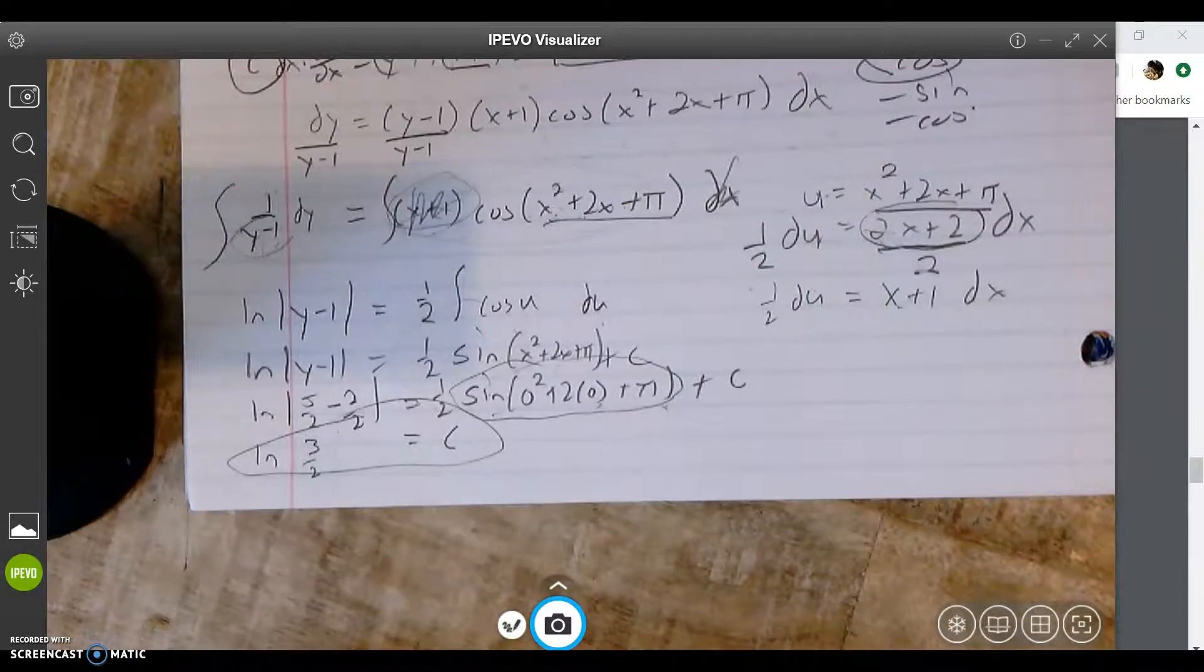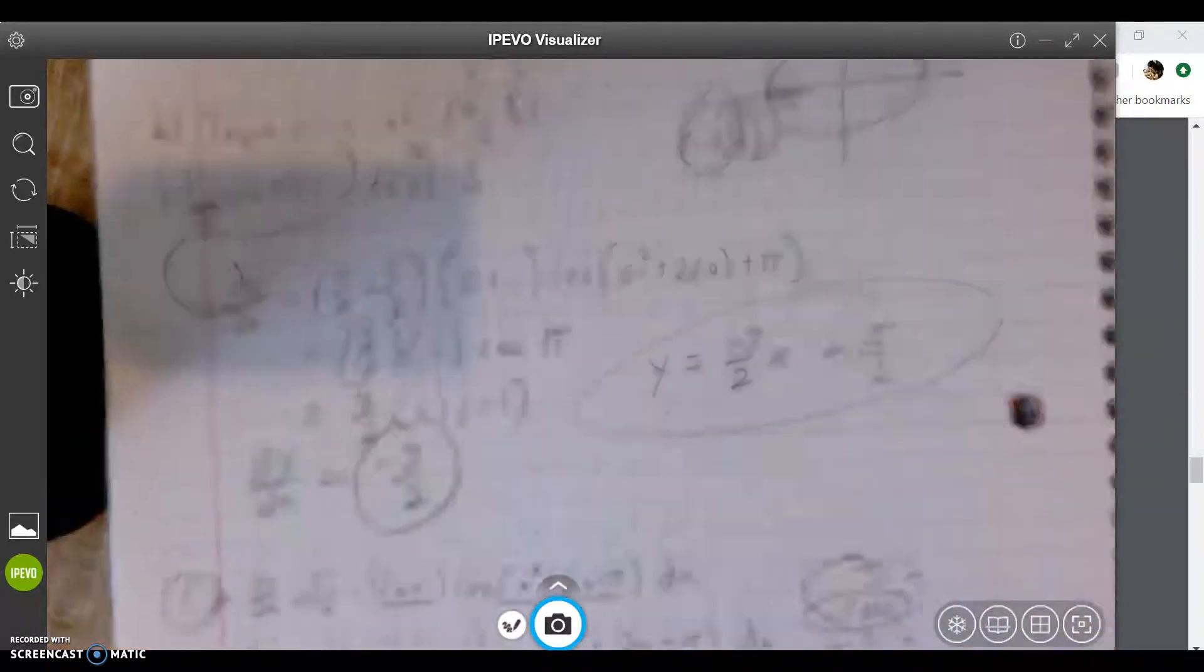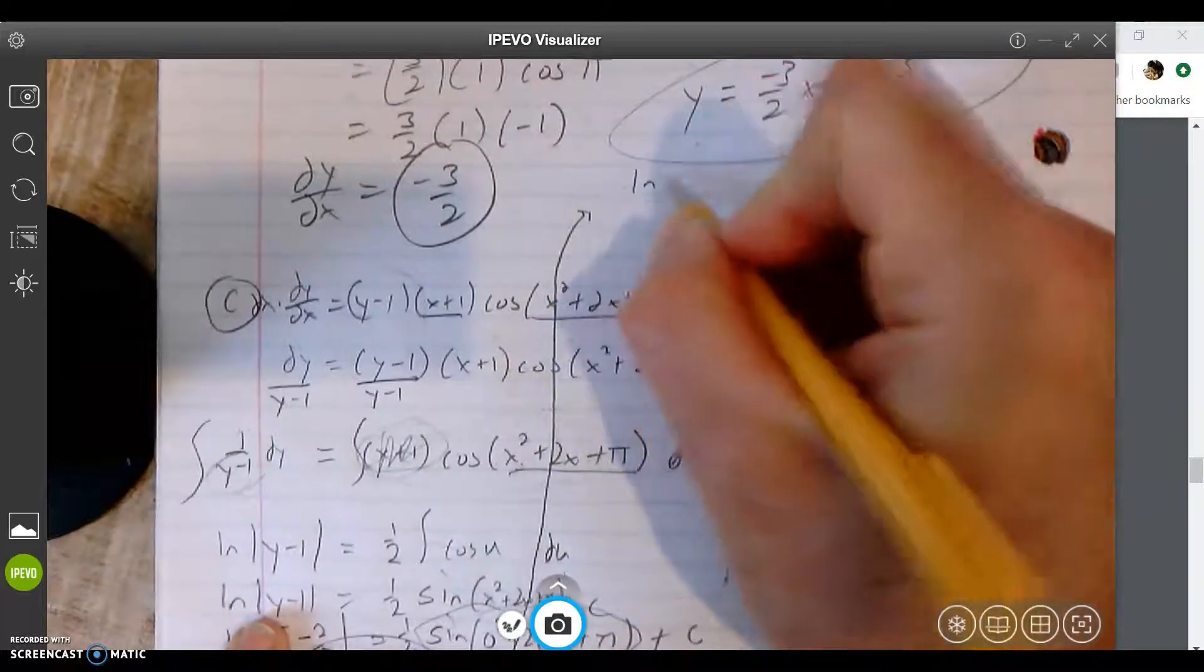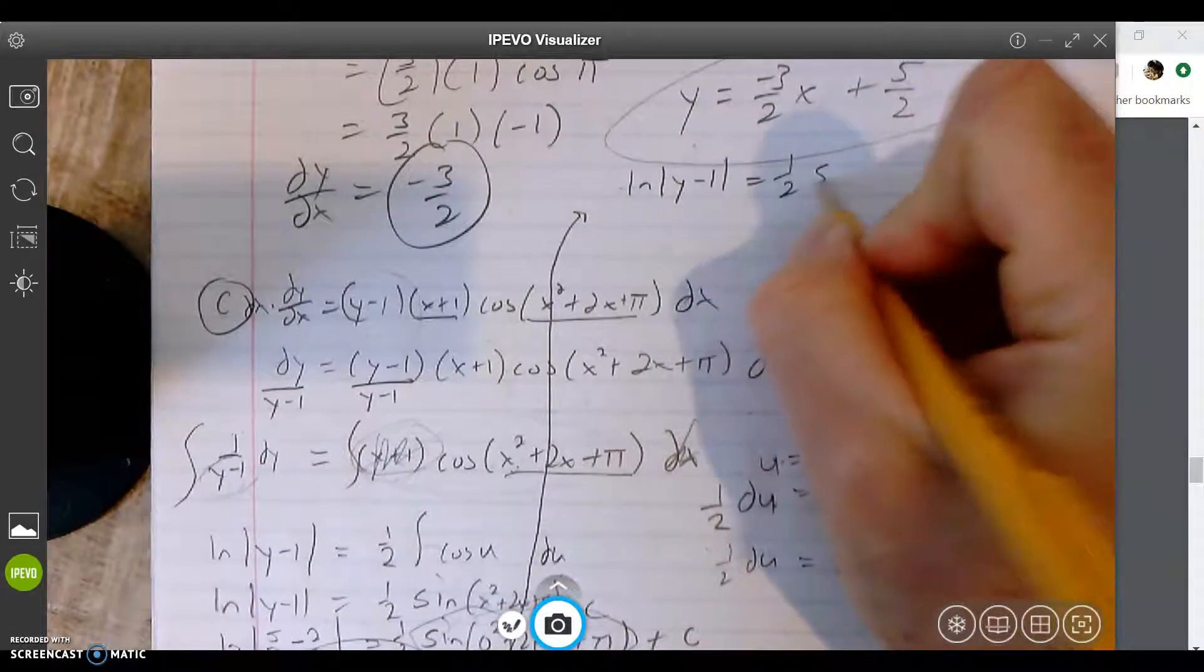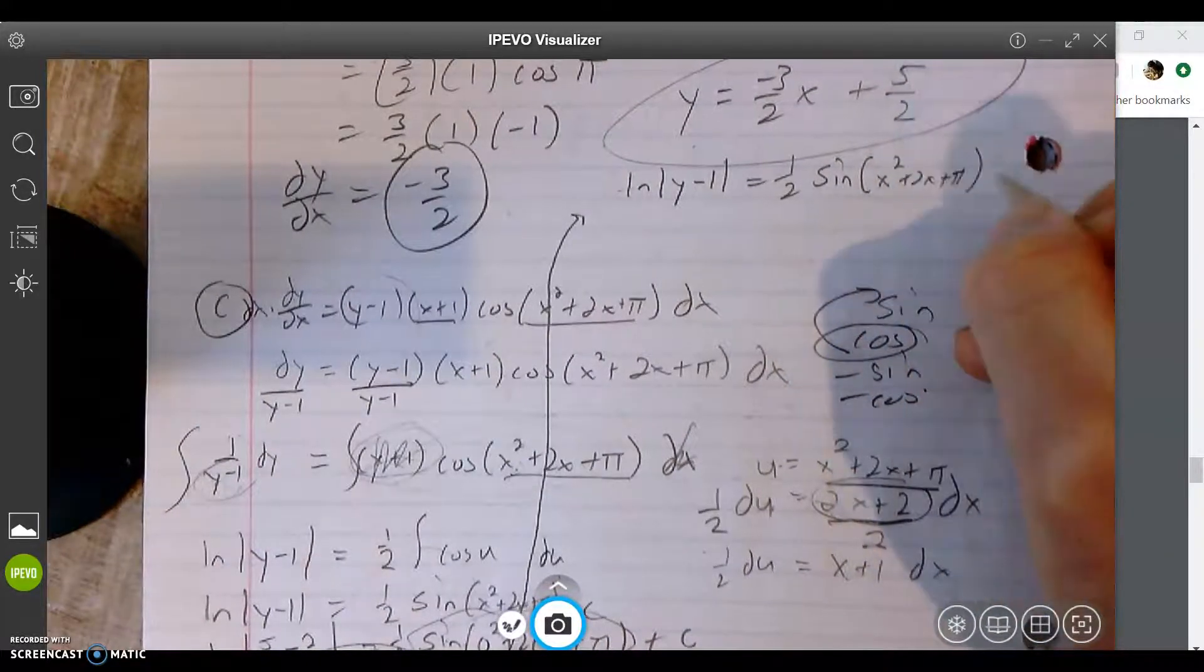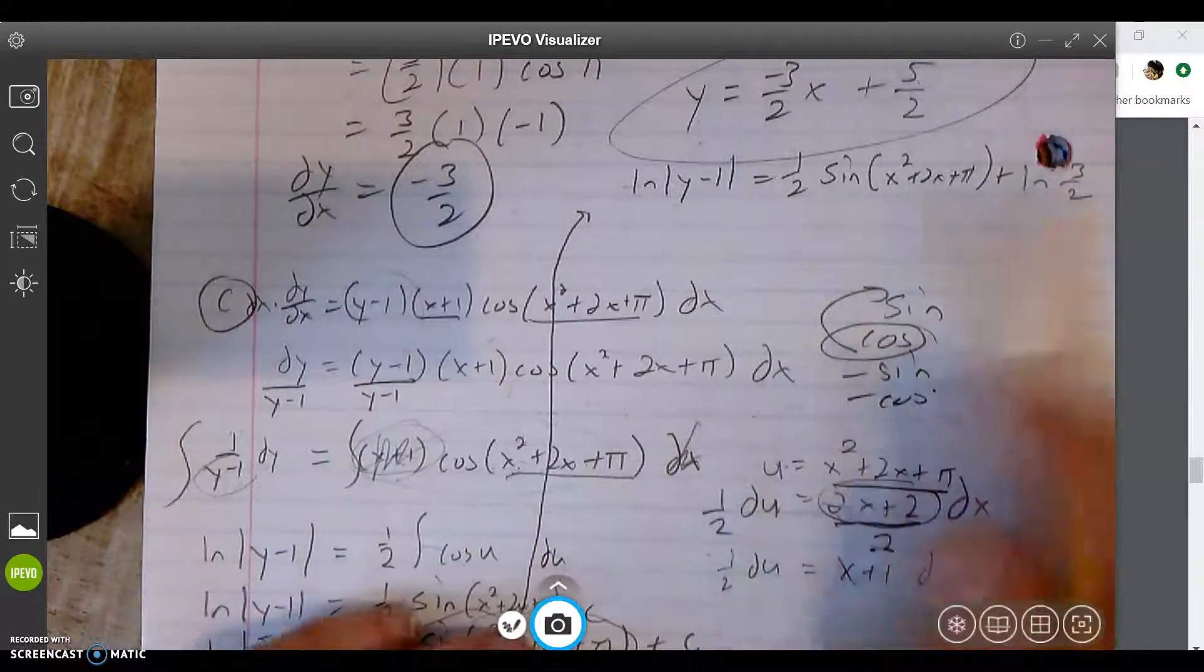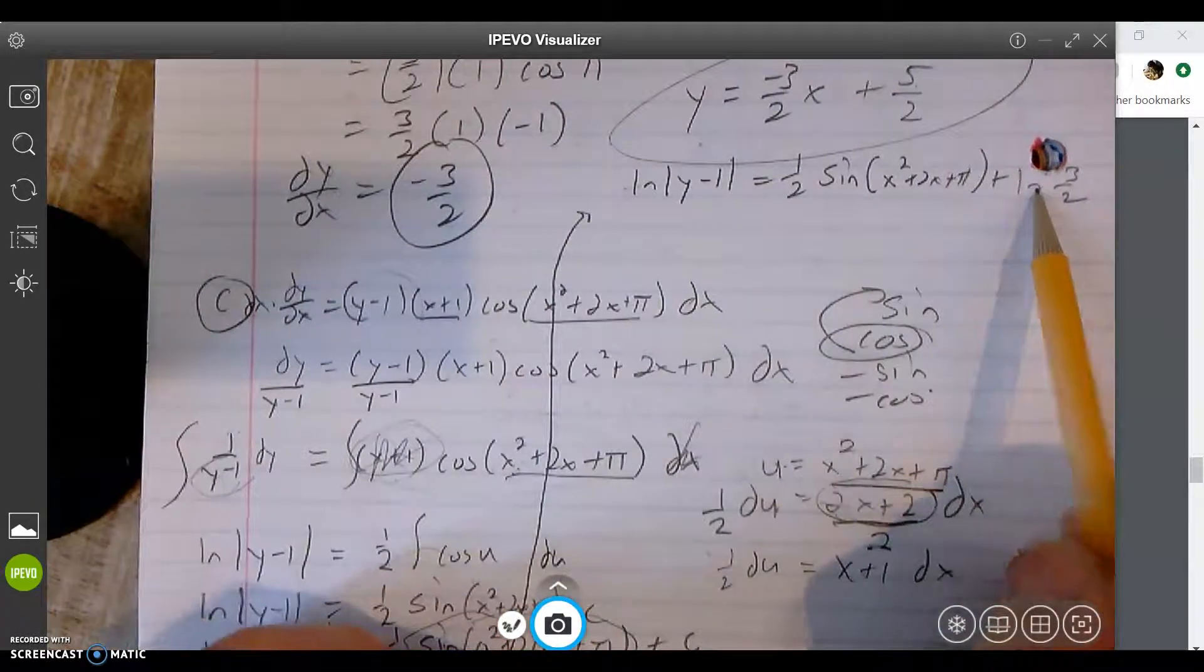Cool. Last thing we've got to do is what? Yeah, we've got to solve for y. We're doing good. So we've got to solve for y. I'm going to write my thing where I've got more room. So far I have ln|y-1| = (1/2)sin(x²+2x+π) + c, which we just got, which is ln(3/2). So yeah, cool. Even if you get funky numbers like this, just follow what you've got because sometimes when you're doing this, it's like, is this right? I don't really know if that's right. Yeah, it is.